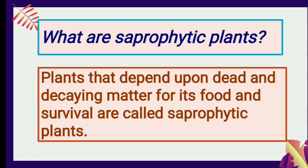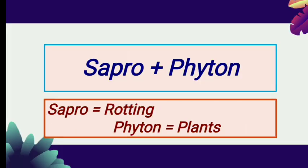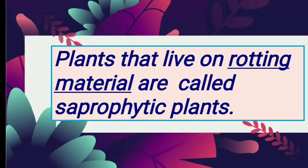The word 'saprophytic' is made up of two words: 'sapro' which means rotting, and 'phyton' which means plants. So we can say plants that live on rotting material are called saprophytic plants. When dead animals and leaves start rotting, these kinds of plants grow on them.